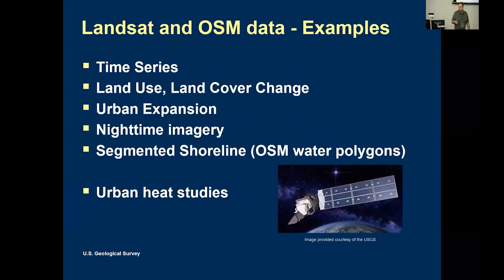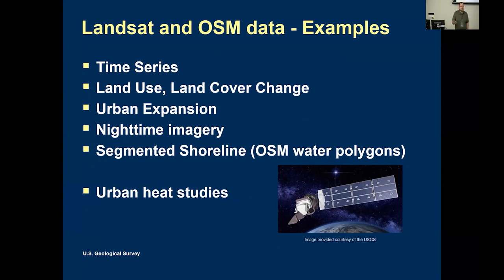What are some use cases where you might use OSM data together with Landsat time series? Landsat data goes back more than 50 years. OSM shows a current-day map of what's there, but you can look at historical Landsat data to determine how it grew to the point it is now. Land use and land cover change is another example — the parks layers, the water layers — you can see how those change historically with Landsat data overlaid onto OpenStreetMap.